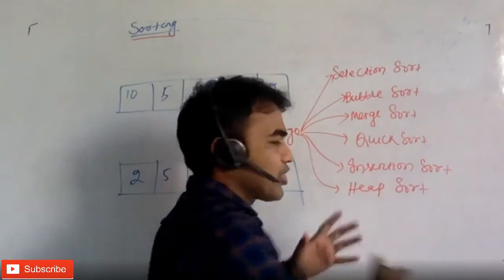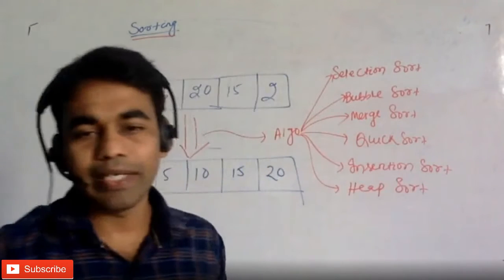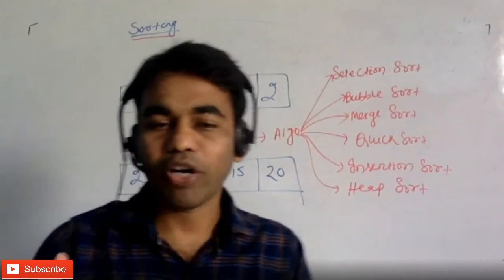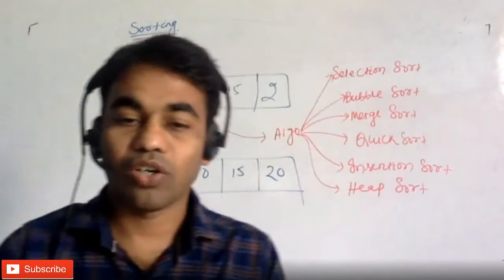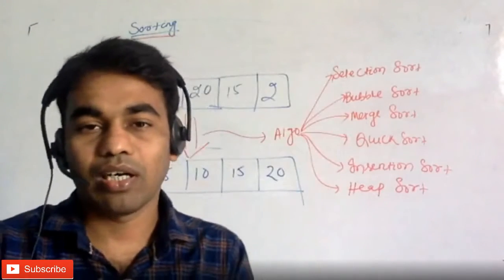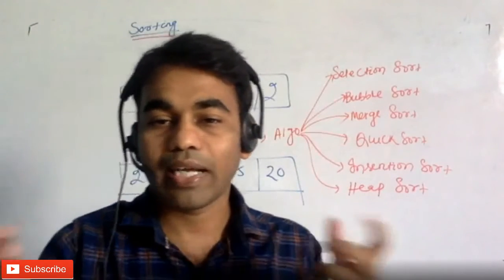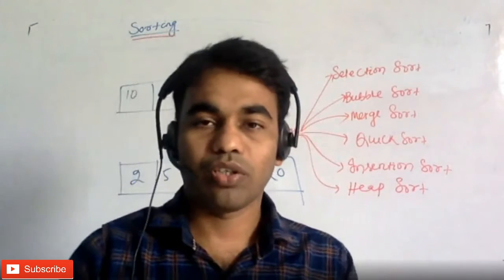The list can go on — there is bucket sort, shell sort, and different kinds of sorts.